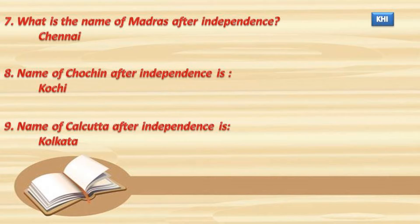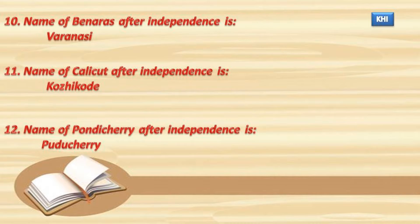8. The name of Cochin after independence is Kochi. 9. The name of Calcutta after independence is Kolkata. 10. The name of Banaras after independence is Varanasi.